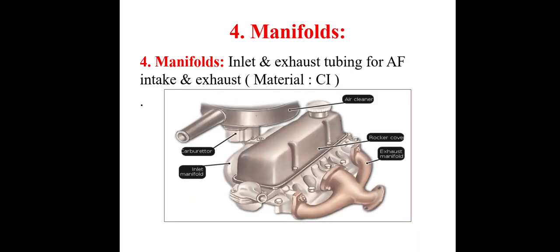The fourth component is manifolds. There are two types of manifolds used in IC engines: the inlet manifold and the exhaust manifold. This diagram is for the SI engine, where a carburetor is provided.